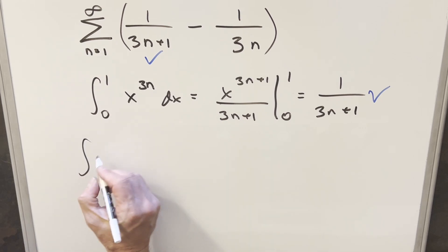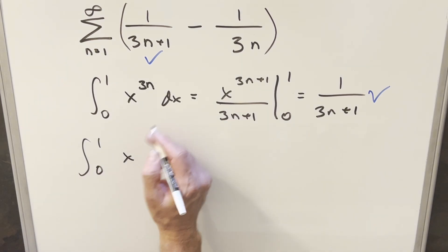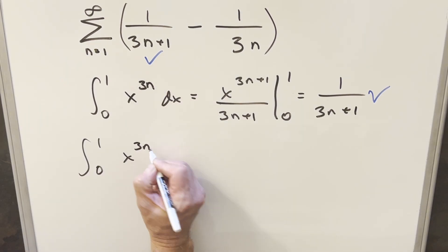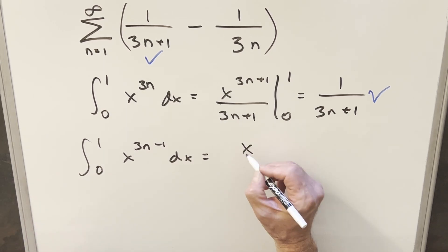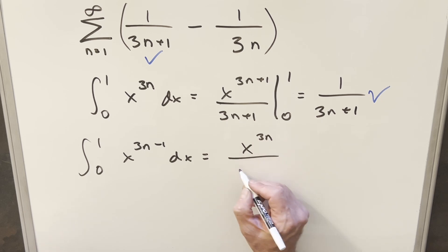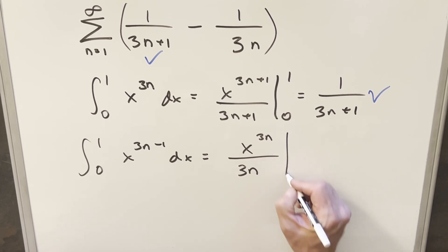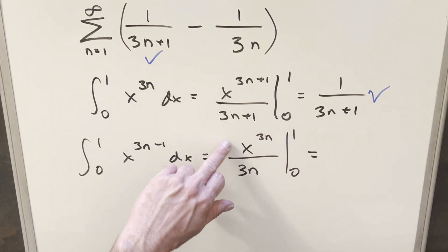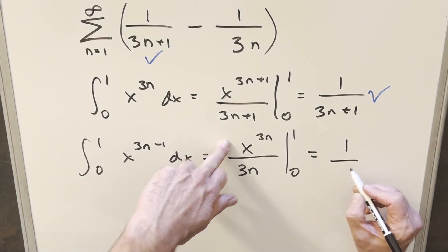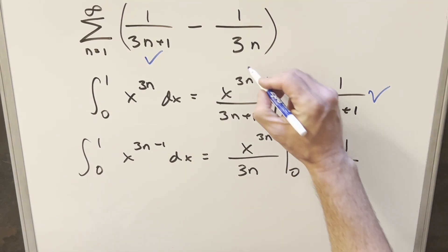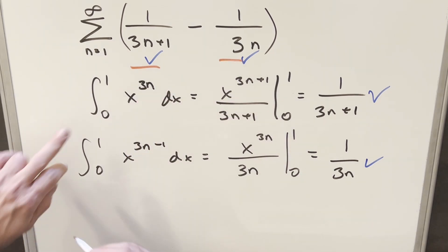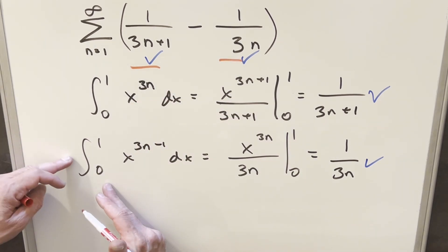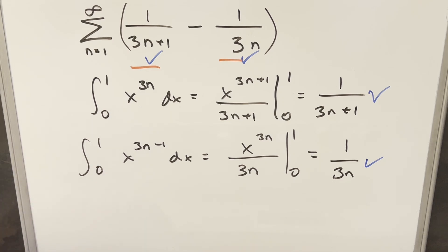For the other term, we can do the exact same thing, integrating from 0 to 1. This time we need a different exponent: integrating x to the (3n minus 1) gives x to the 3n over 3n, evaluated from 0 to 1. Zero contributes nothing, and plugging in 1 gives exactly 1 over 3n. So I want to replace each of these terms with their integral representations, and since the bounds are the same, I can put it all under one integral sign.